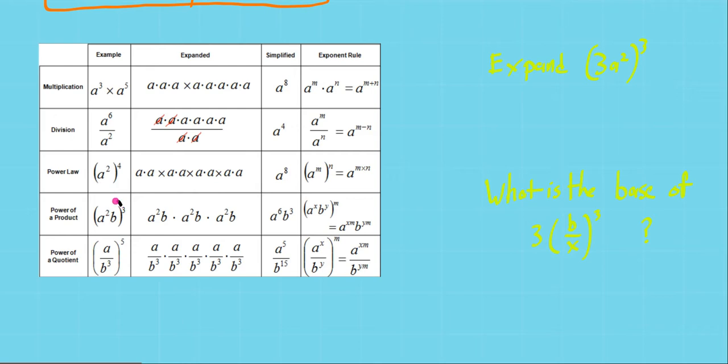So a squared times 3, so a to the 2 times 3, or a to the 6, which is what we ended up with. And b, which is to the 1, if there's no exponent, it's to the 1, so the 1 times 3, which is 3. And in the end, we did end up with 3 b's.